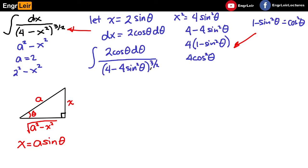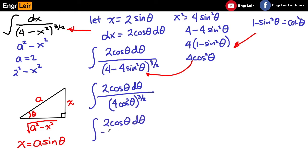Ibig sabihin, yung nasa babang part, pwede nating palitan ng 4 cosine squared theta. So, we have 2 cosine theta d theta all over 4 cosine squared theta raised to 3 over 2. And doing the exponent doon sa bottom, we can further simplify this as 2 cosine theta d theta all over 8 cosine cubed.